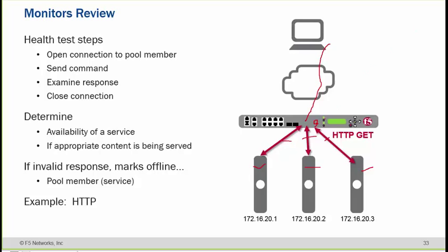There should be a mechanism between F5 and the servers so that F5 can see whether internal servers are live or offline. This mechanism is called a monitor, which checks the health status and availability of internal servers — it does not check the health of the client. You can use ping, service checks, or even scripted monitors. If a particular response comes from the application, F5 assumes the server is healthy and sends traffic to it.